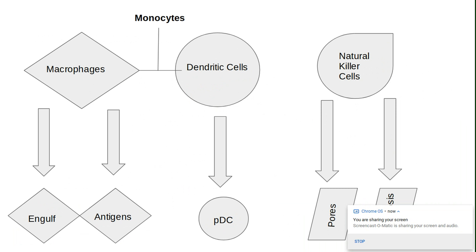Dendritic cells can be found either stationary within the lymph nodes and spleen, or as migratory cells in the blood. Plasmacytoid dendritic cells, or PDCs, are unique because they produce a large quantity of alpha and beta interferons in response to viral and bacterial stimuli.